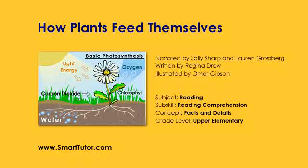Then carbon dioxide from the air, which is breathed out by animals, is absorbed into the leaves through tiny pores called the stomata. It is then taken to cells inside the leaves. These cells contain a green pigment called chlorophyll.